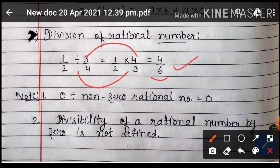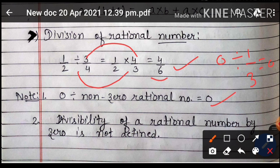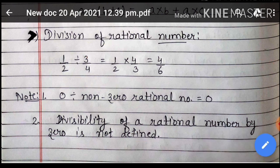Special note देखिए: अगर हम 0 को divide करना है किसी non-zero rational number से — जैसे 0 divide 1 by 3 — तो वो 0 के equal होगा. लेकिन अगर हम किसी rational number को 0 से divide करें — जैसे 1 by 2 divide by 0 — तो वो not defined होगा. तो यह special note ध्यान रखना है: किसी rational number को 0 से divide करेंगे तो not defined होगा, लेकिन 0 को किसी non-zero rational number से divide करेंगे तो answer 0 होगा.